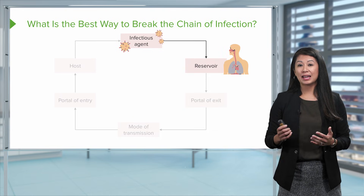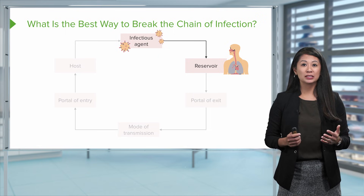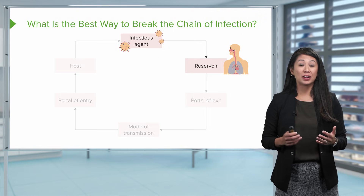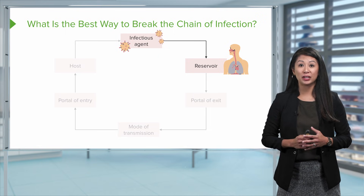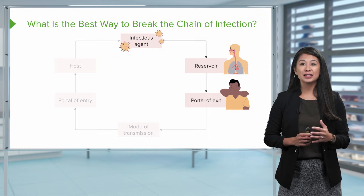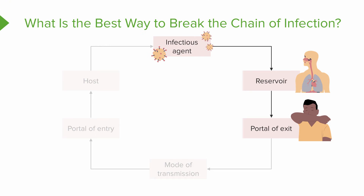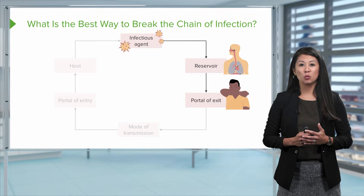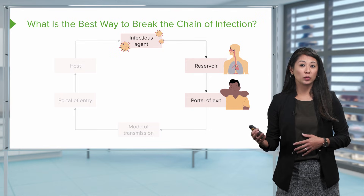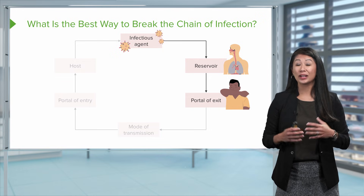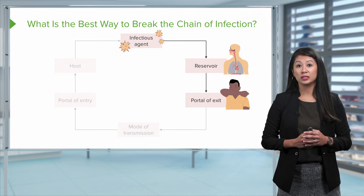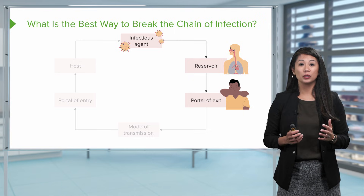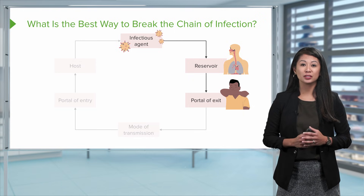When we're looking at that infectious agent, the first thing it's going to do is find a reservoir, such as a human body. Next in the chain of infection, we look at how does that virus leave that reservoir and exit the body. This could be via blood, respiratory secretions, or any other body fluids. In the case of the flu, think about the respiratory secretions.